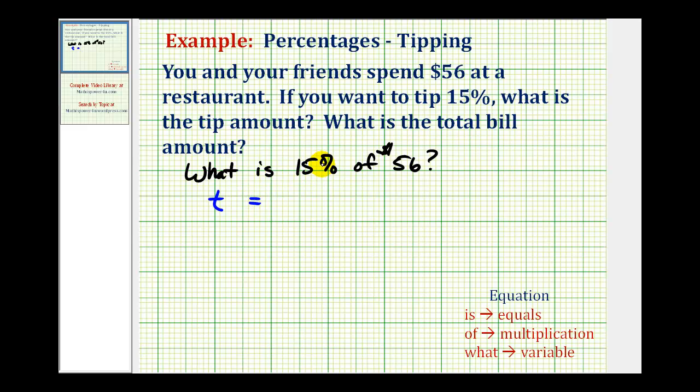We need to write fifteen percent as a decimal, which would be zero point one five. Of means multiplication. And then we have the number fifty-six.